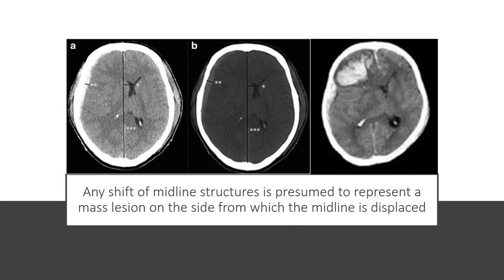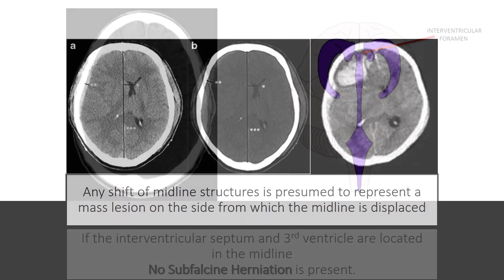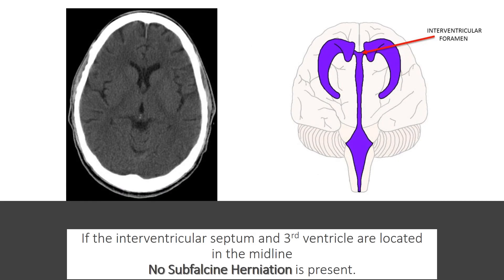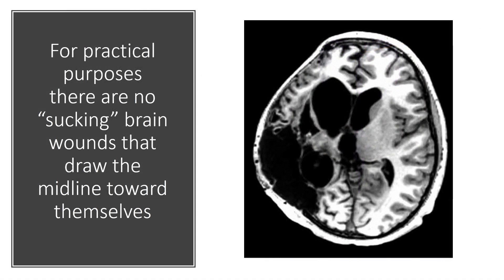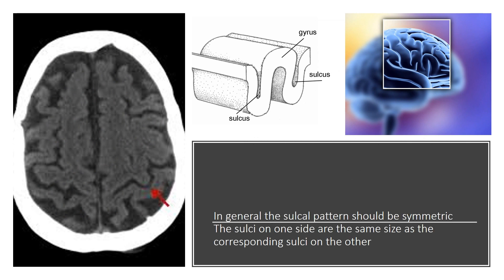Any shift of midline structures is presumed to represent a mass lesion on the side from which the midline is displaced. If the interventricular septum and third ventricle are located in the midline, no subfalcine herniation is present. For practical purposes, there are no sucking brain wounds that draw the midline toward themselves. In general, the sulcal pattern should be symmetric.